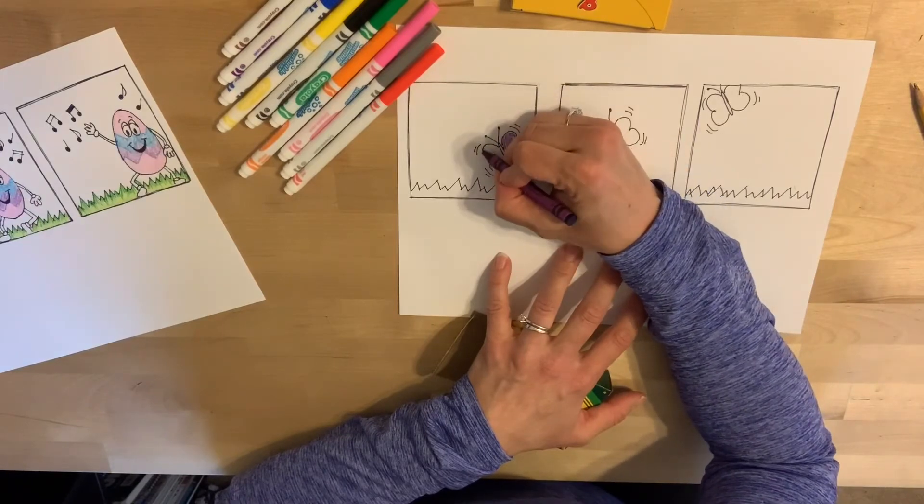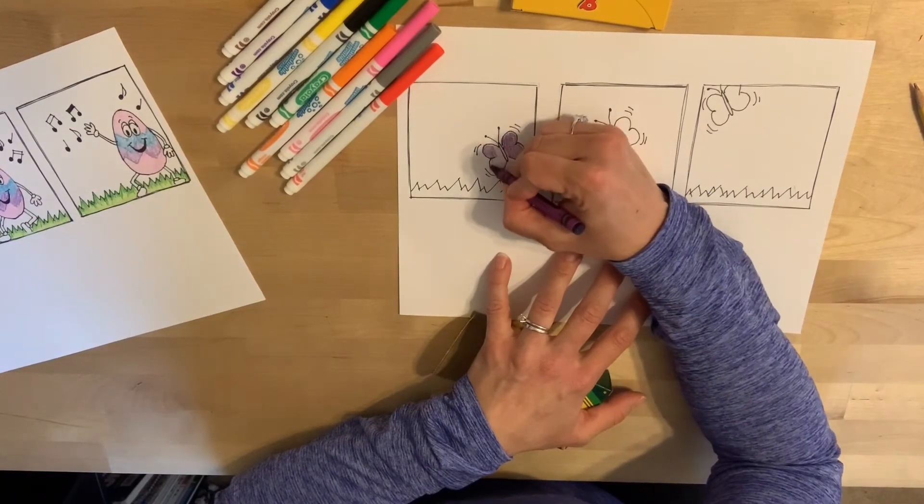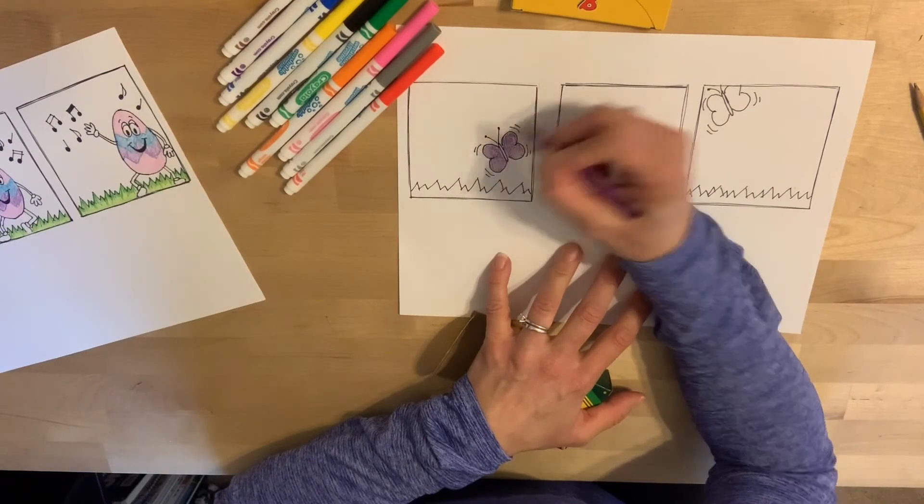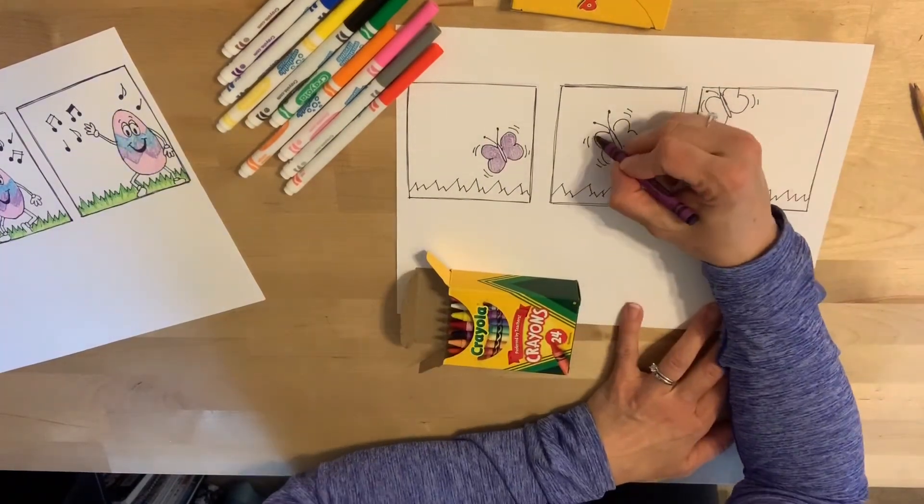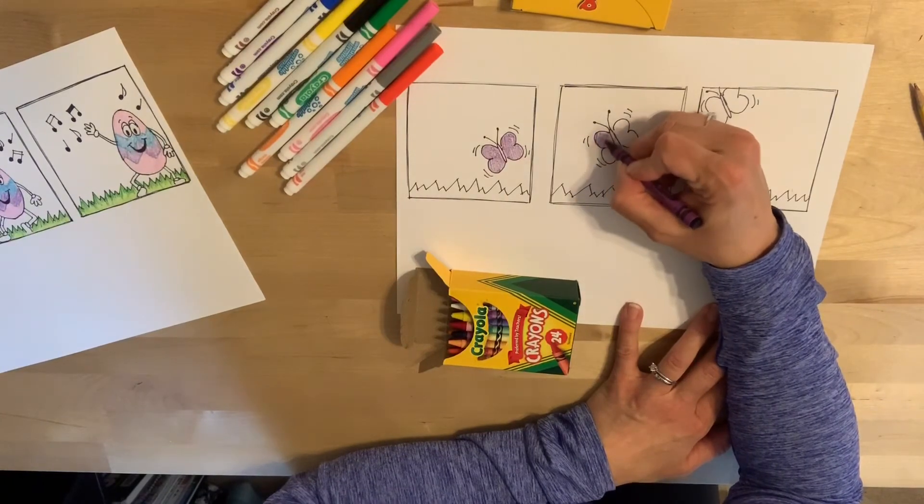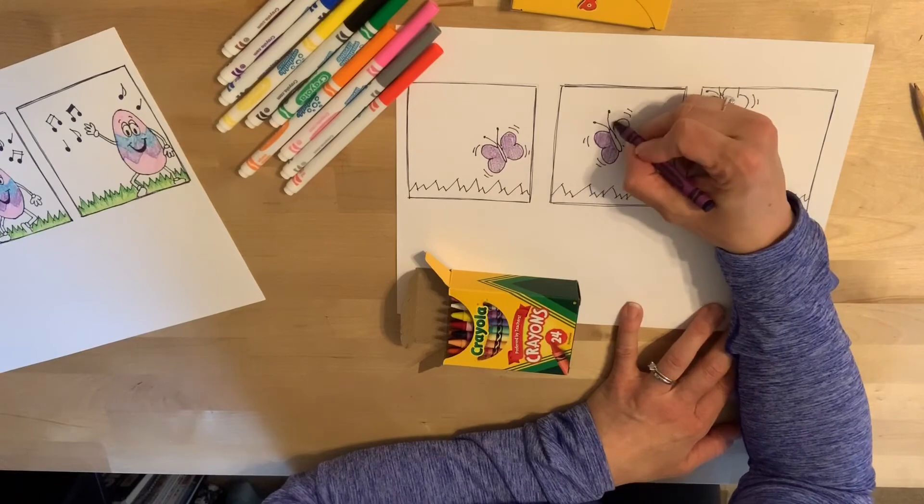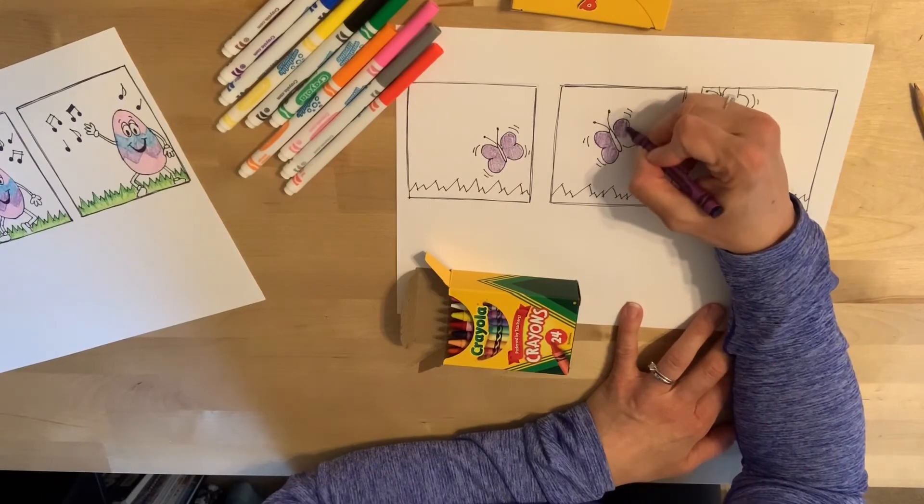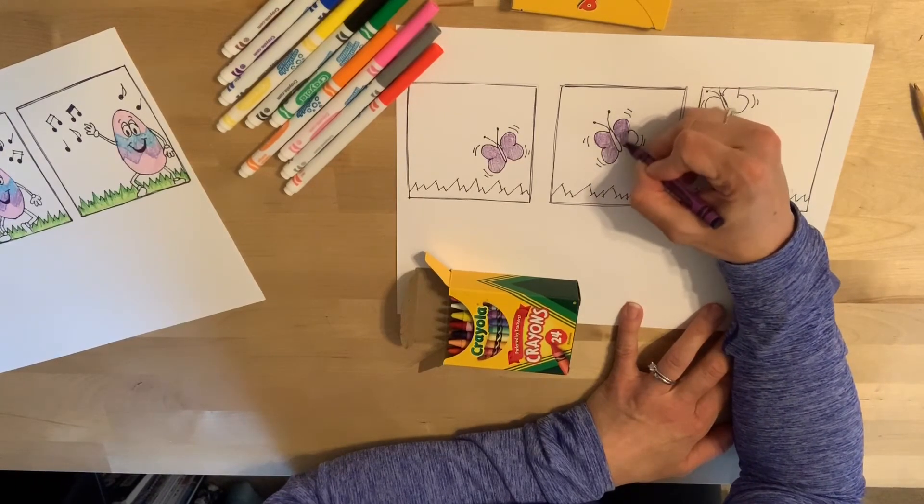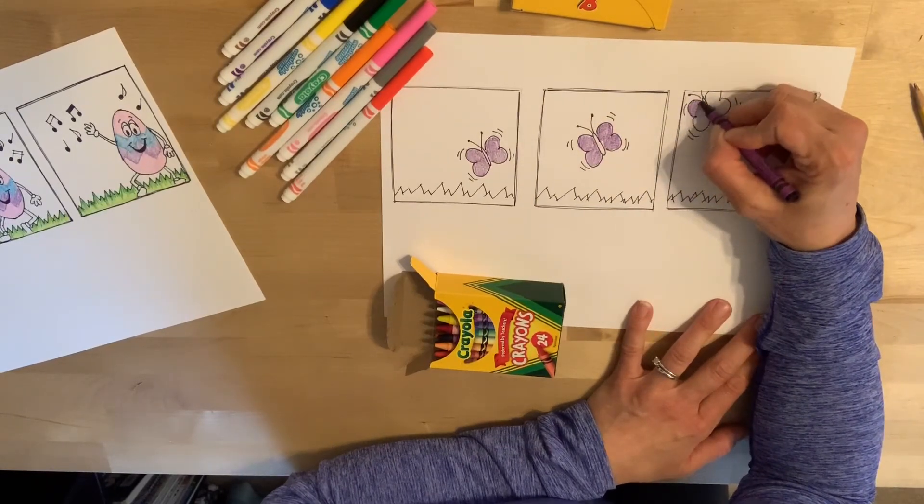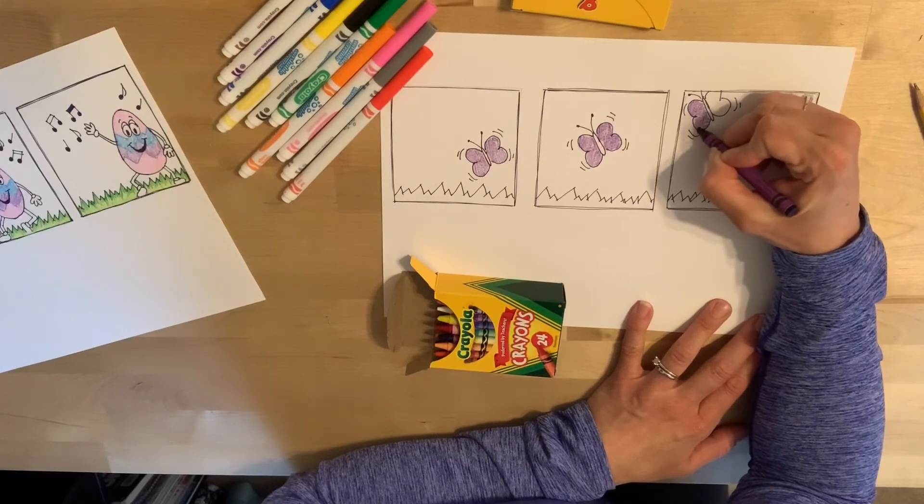If you decided that you wanted to add some words to your comic strip, I would definitely trace over the words with that black Sharpie or black pen, black colored pencil, whatever you're using, to make sure that they don't get lost with everything that's being colored. Speech bubbles are always white in the back behind the words too, so that they're easier to read. So, make sure that you don't color those speech bubbles in. Because we want people to be able to read your comic strip.